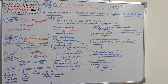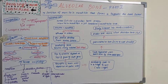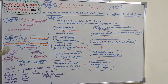Alveolar bone has various functions: it provides attachment to the periodontal ligament, absorbs occlusal pressure, gives attachment to muscles, provides a framework for the marrow, serves as a reservoir for ions especially calcium, and hosts the roots of teeth — achieved by the insertion of Sharpey's fibers into alveolar bone proper.